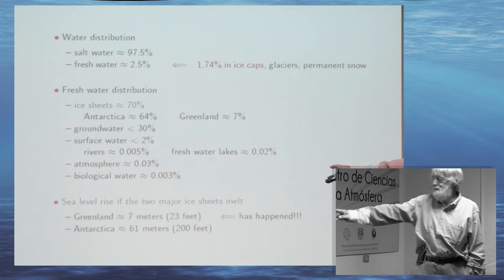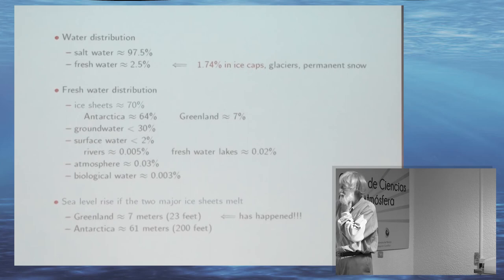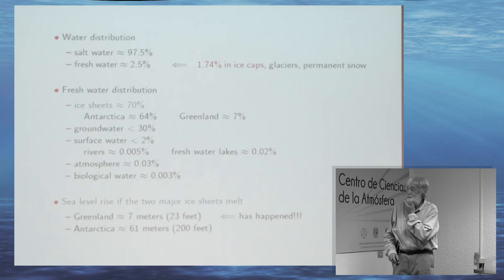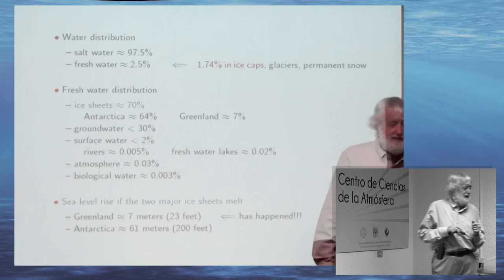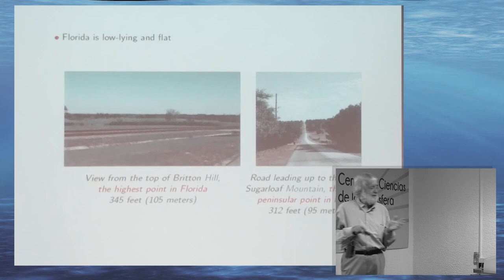What happens if all the ice in Greenland and Antarctica disappears? If all the ice disappears from Greenland, sea levels will rise by 7 meters. And it's happened — over geological time, Greenland has had no ice. But Antarctica: if all of Antarctica melts, it's 61 meters of sea level rise.